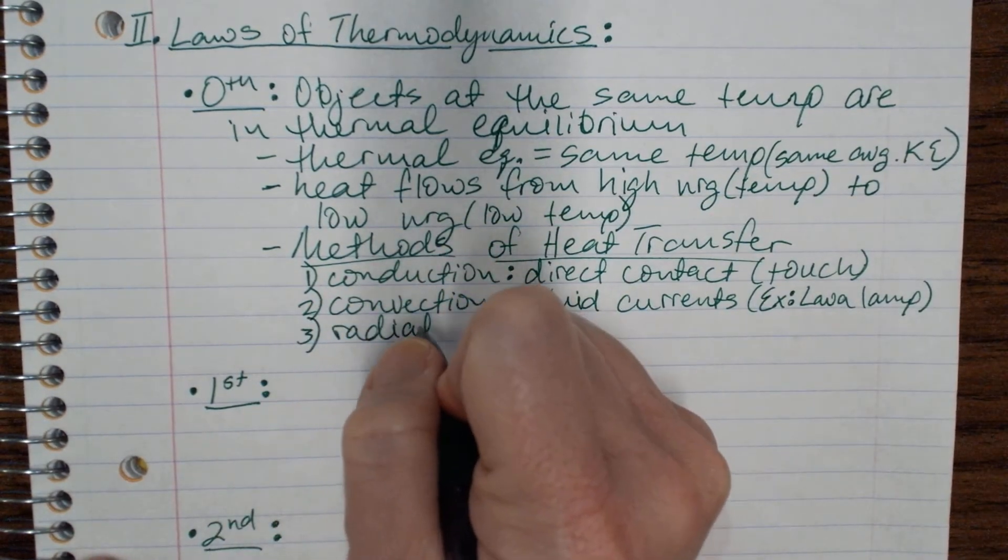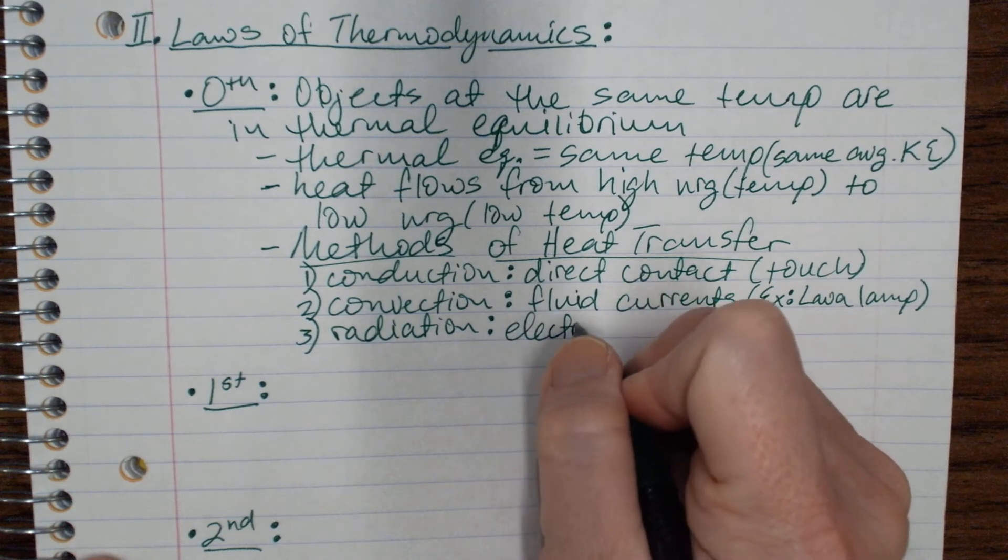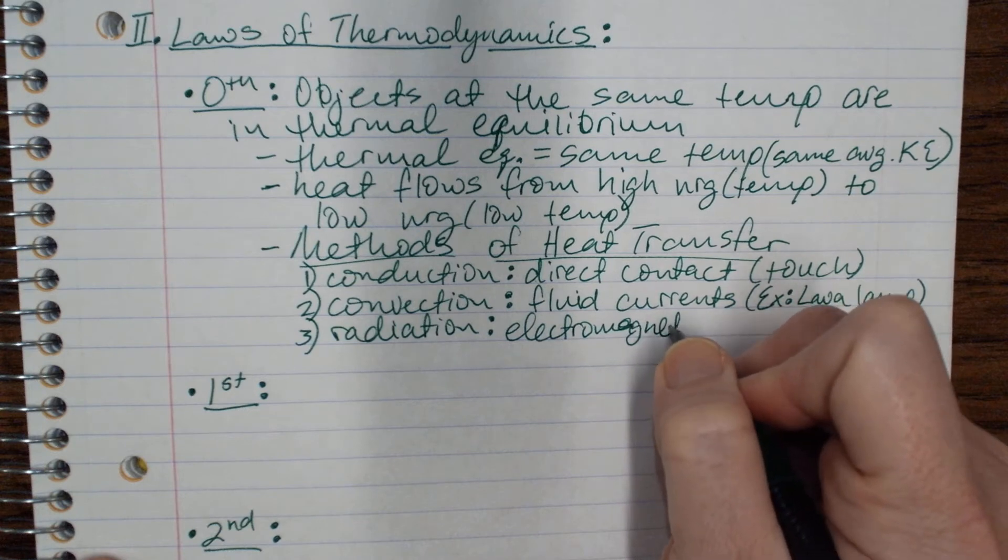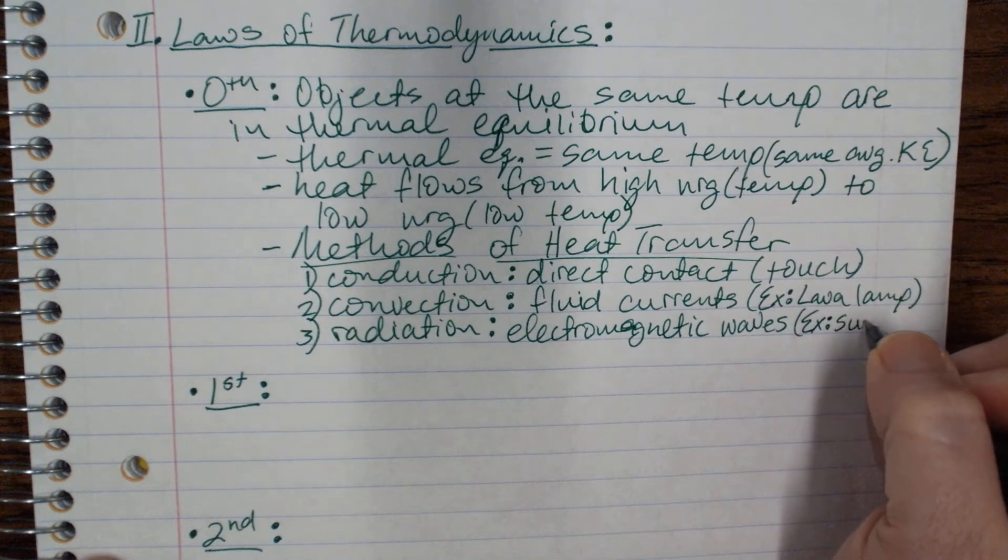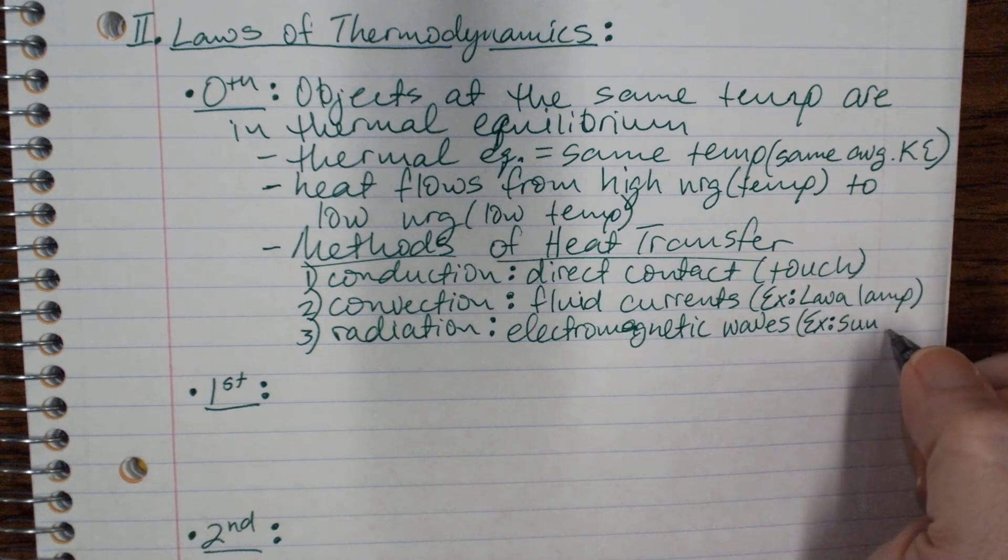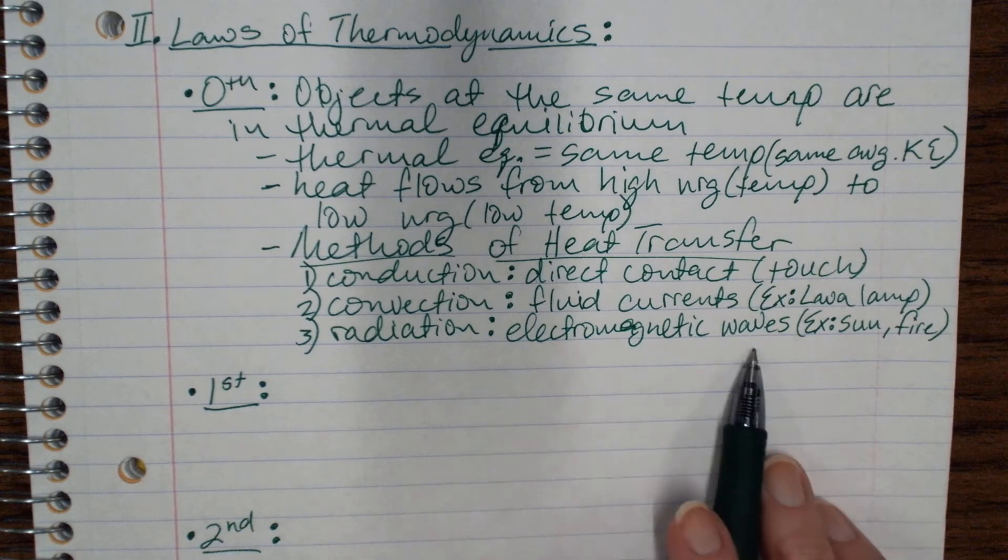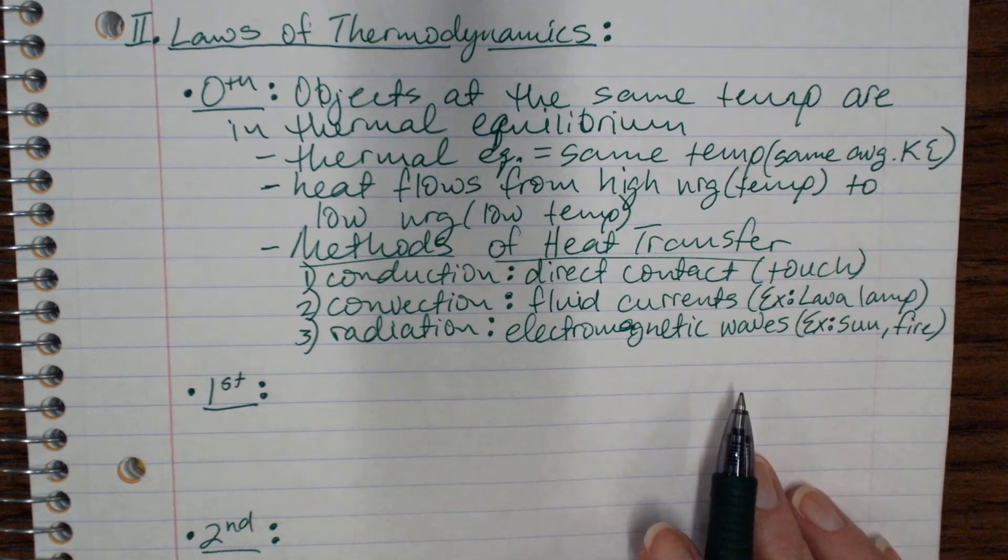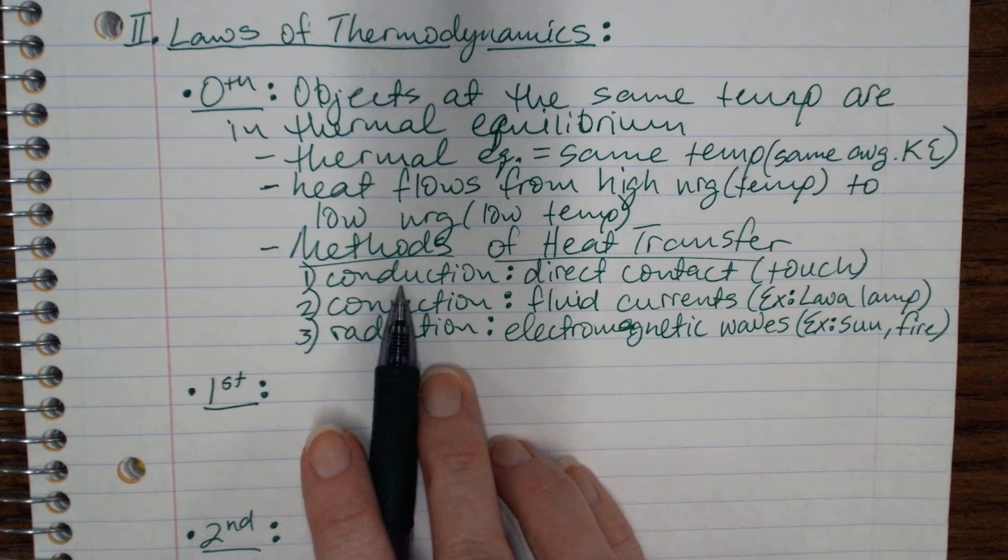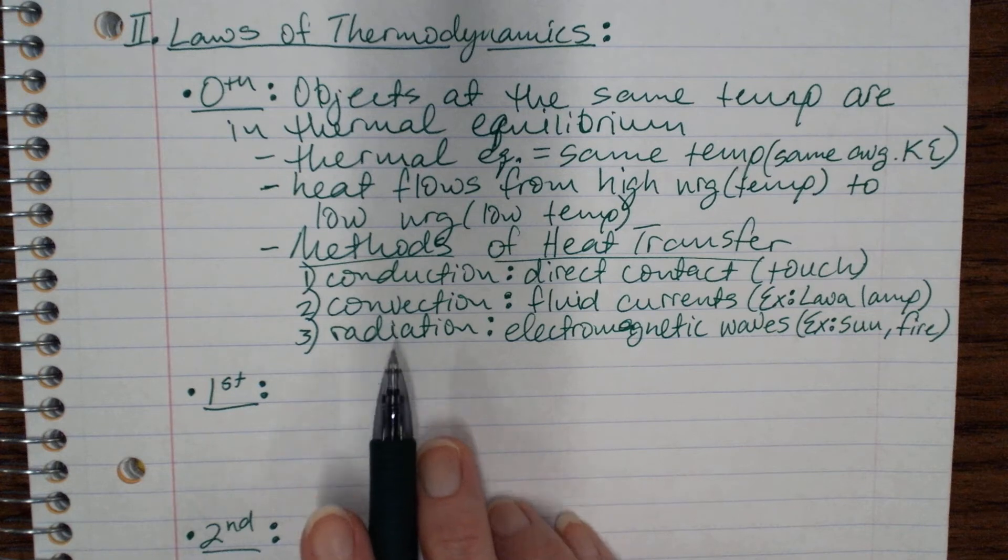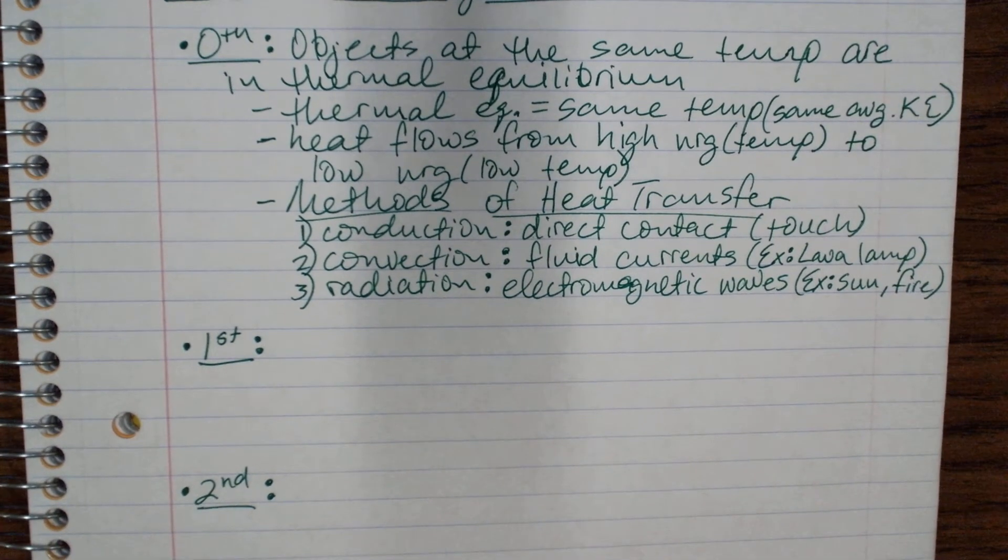And the third one is radiation. And this is heating something by using electromagnetic waves. So examples of this would include the sun. The sun heats the earth by electromagnetic waves. Fire. If you're sitting next to a campfire. Electromagnetic waves do not require a medium. So this can happen. It doesn't matter if it's a solid, liquid, or gas, or if it flows through a vacuum. It can still radiate. So radiation doesn't require a medium. Conduction requires touch, so that would be solids and liquids. Convection requires fluids, so that would be liquids and gases. Radiation doesn't require any medium at all. It can just radiate. That's the zeroth law and the methods of heat transfer.